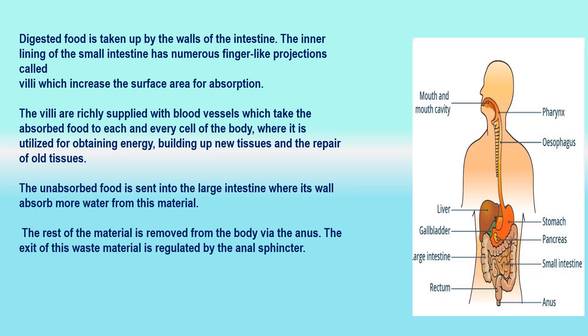The walls of the small intestine contain glands that secrete intestinal juice with enzymes that complete the digestion of complex carbohydrates into glucose, proteins into amino acids, and fats into fatty acids and glycerol. These are small, water-soluble molecules. The process of digestion converts large, insoluble food molecules into small, water-soluble molecules, brought about by biological catalysts called enzymes. The inner surface of the small intestine has millions of tiny finger-like projections called villi, which provide a very large surface area for rapid absorption of digested food into the blood.